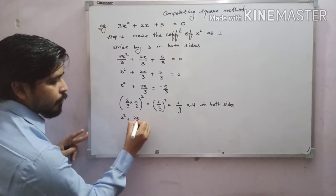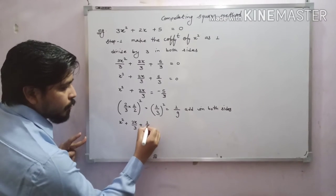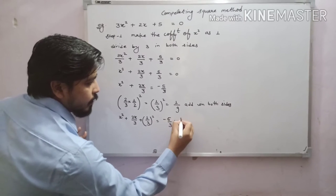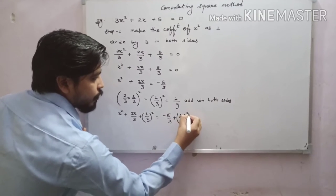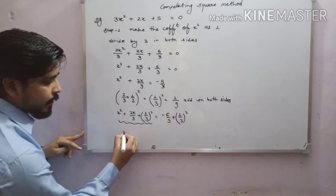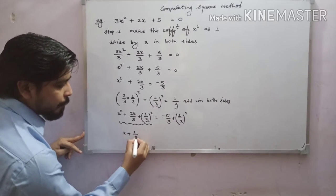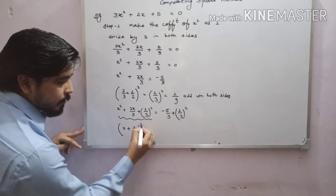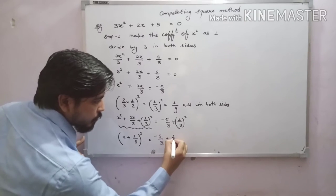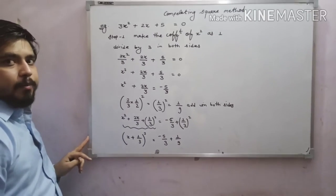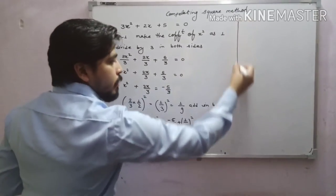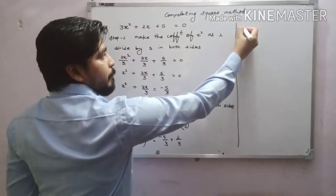So: x² + 2x/3 + (1/3)² = −5/3 + 1/9. Now this will become a complete square. The left-hand side becomes (x + 1/3)². This is why we call it completing the square — because we are making a perfect square, and the left-hand side is now completely solved.